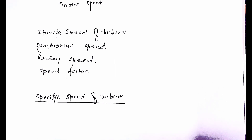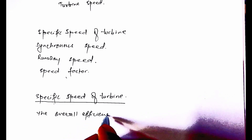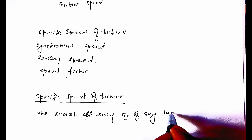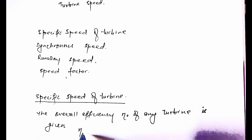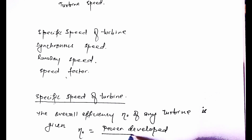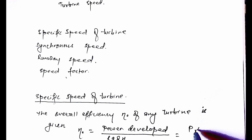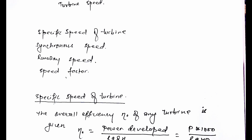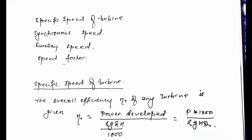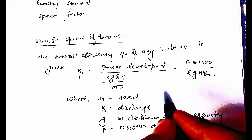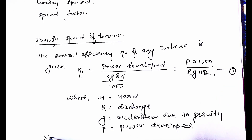The overall efficiency of any turbine is given by: efficiency equals power developed divided by (ρ·g·Q·H / 1000). Here H equals head, Q equals discharge, g equals gravity, and P equals power developed. This is equation one.